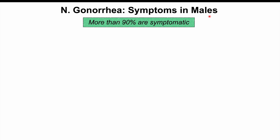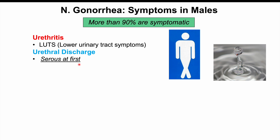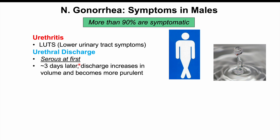In males, urethritis is the primary presentation, and more than 90% of males will be symptomatic. Symptoms include lower urinary tract symptoms such as dysuria, burning sensation, irritation, and urinary frequency or urgency. A more specific finding is urethral discharge — first a clear serous discharge, then approximately three days later the discharge increases in volume and becomes purulent, producing a white pus-like discharge from the urethra.